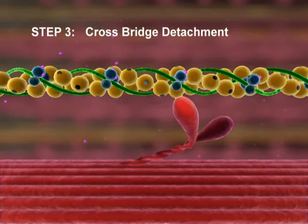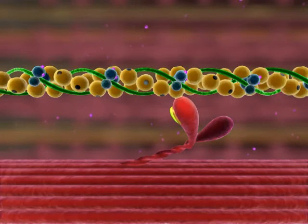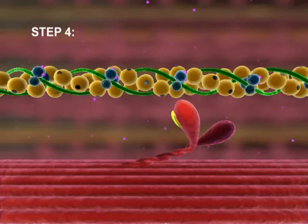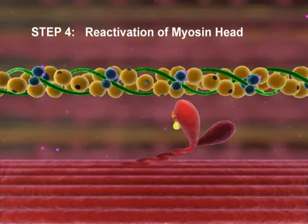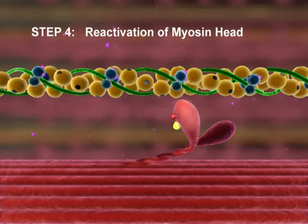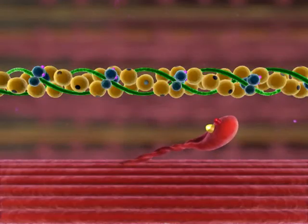Step 3: Crossbridge Detachment. When another ATP binds to the myosin head, the link between the myosin head and actin weakens, and the myosin head detaches. Step 4: Reactivation of the myosin head. ATP is hydrolyzed to ADP and inorganic phosphate. The energy released during hydrolysis reactivates the myosin head, returning it to the cocked position.